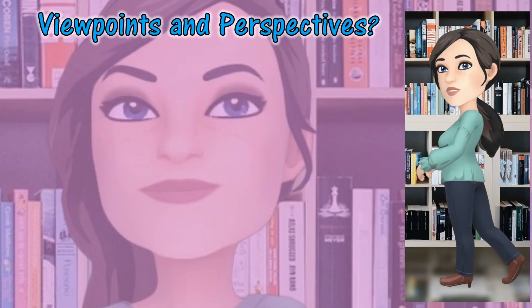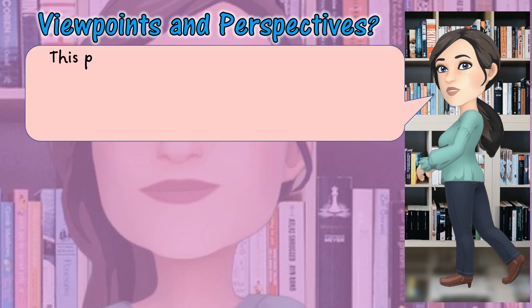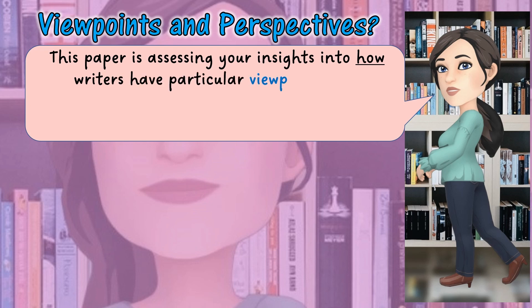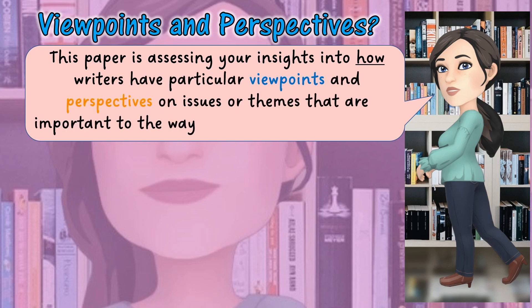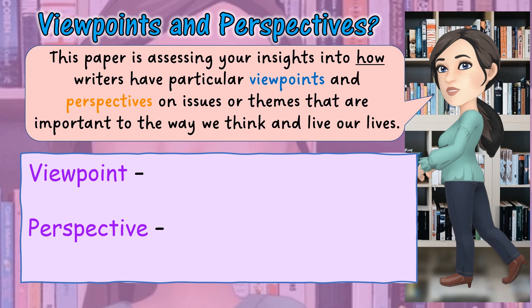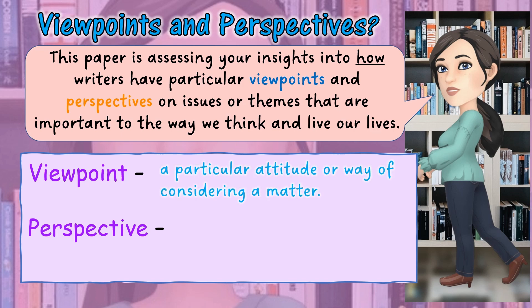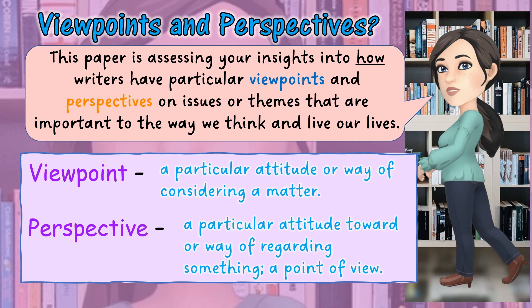Firstly, what do we mean by viewpoints and perspectives? If we're looking to find the writer's viewpoints and perspectives, we need to have a good idea of what they are. This paper is assessing your insights into how writers have particular viewpoints and perspectives on issues or themes that are important to the way we think and live our lives. So what's the difference between viewpoint and perspective? Well, very little — they essentially mean the same thing. A viewpoint is a particular attitude or way of considering a matter, and a perspective is a particular attitude towards or way of regarding something, i.e. a point of view, which is another way of saying viewpoint. Basically, what do they think and feel?